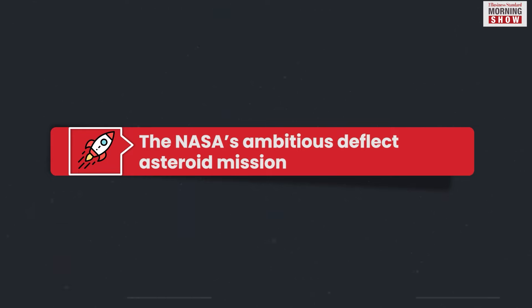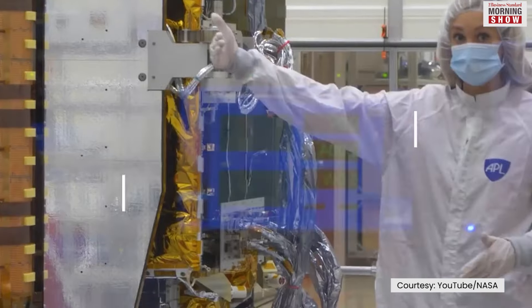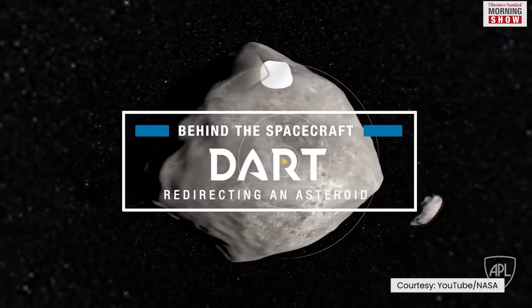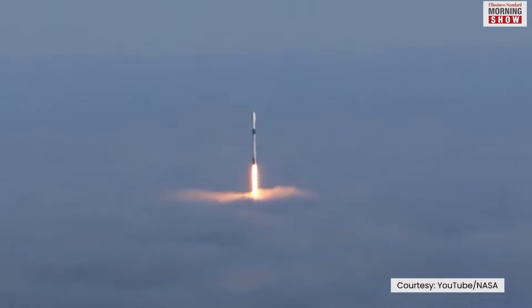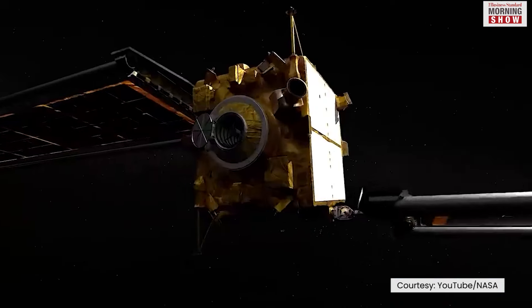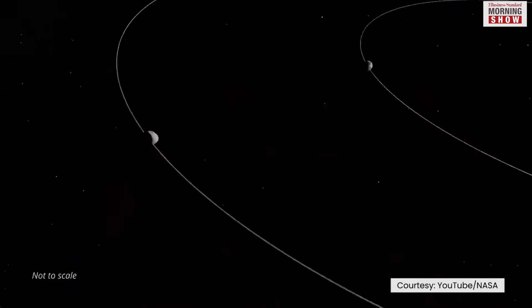In the last seven years, the American space agency spent around 330 million dollars on the mission named Double Asteroid Redirection Test, or DART. NASA, which has an annual budget of above 23 billion dollars, wanted to see if this spacecraft's impact can change the trajectory of an asteroid.